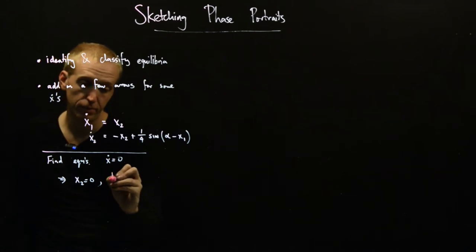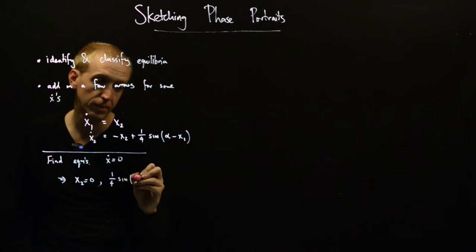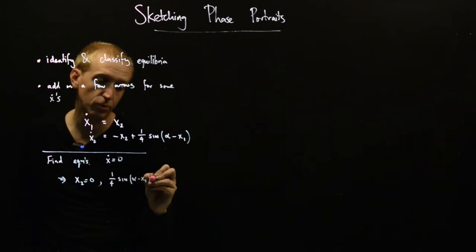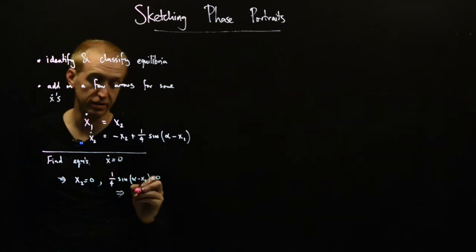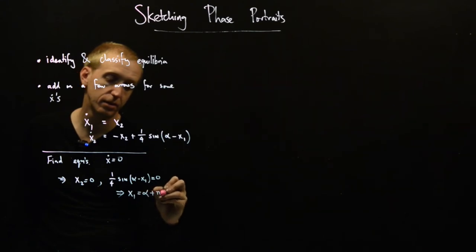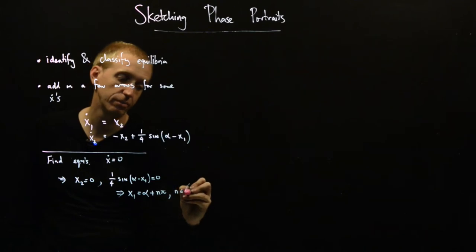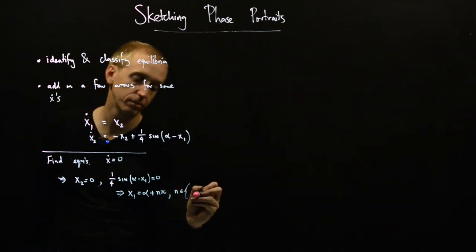Then we need a quarter sine alpha minus x1 to equal zero. And in particular, this implies that x1 equals alpha plus n pi.